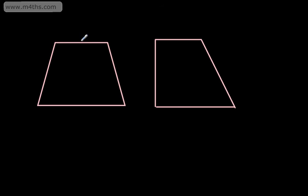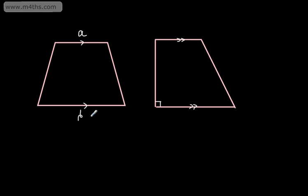With a trapezium, we have two parallel sides. We can show that with a little arrow. So two parallel sides — these two are parallel. What we have is the top, which is A, and the bottom, which is B. This is A, and this is B.